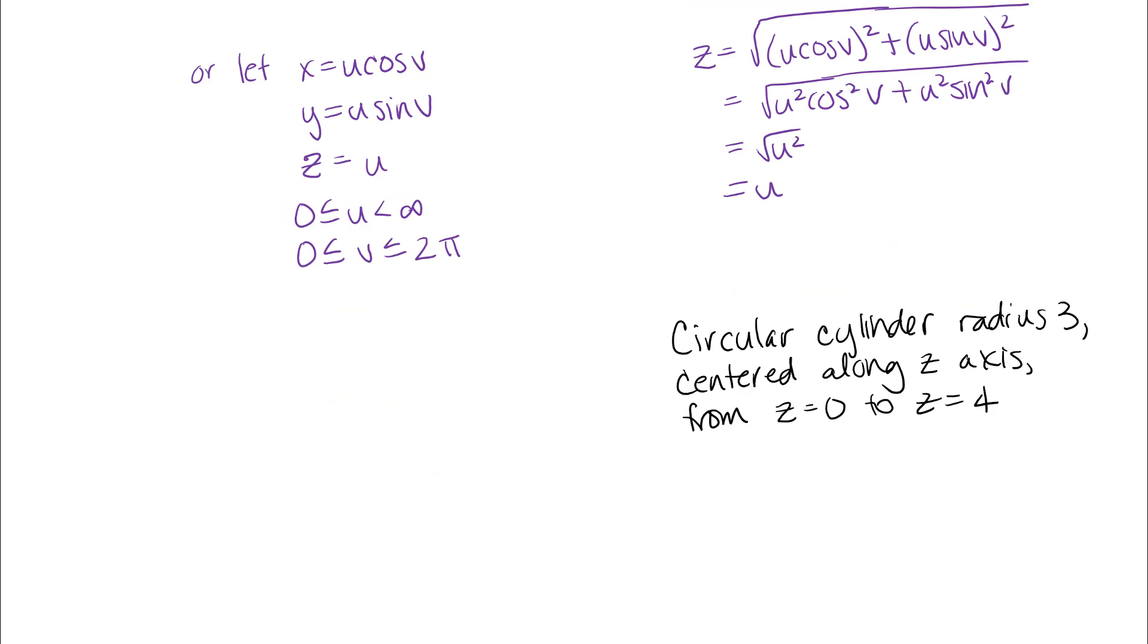So for this one instead of starting with an equation, I have a description of our surface that we're interested in here. And because I have circles in the x, y direction, that might be a clue that perhaps polar coordinates or cylindrical coordinates would be helpful to you. The other thing about this problem is that I don't really have the whole cylinder, I just have the cylinder up till z equals 4. So we'll want to put some restrictions on our variables.